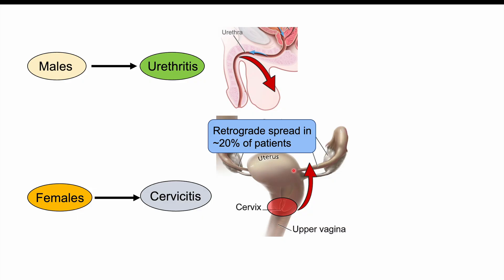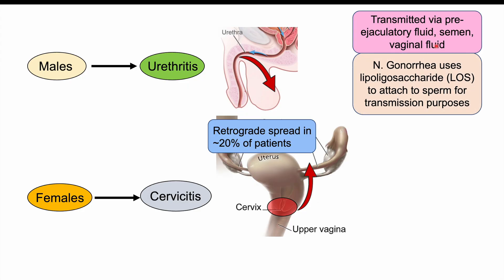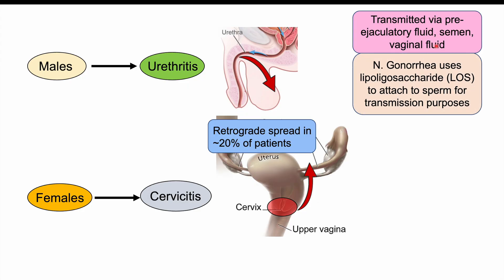Once individuals are infected, the organisms can be spread via pre-ejaculatory fluid, semen, or vaginal fluid. With regards to sperm and semen, Neisseria gonorrhea uses something called lipoligosaccharide, or LOS, to attach to sperm for transmission purposes — attaching to sperm in the ejaculate to help facilitate transmission to other patients.